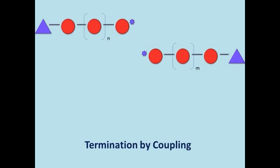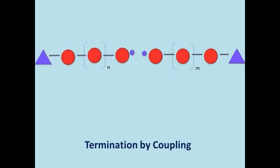The polymerization process can end when the active sites of two chains react to form a bond. This termination method is called coupling.